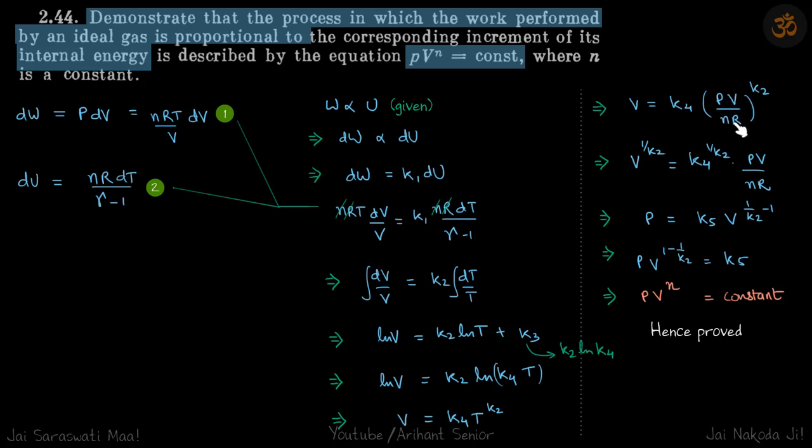And we just open it. So this K2 will go here as 1 by K2, and here also it will come as 1 by K2 into PV by NR.